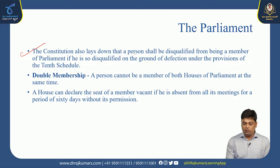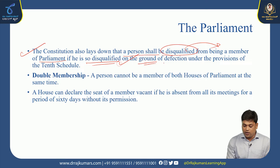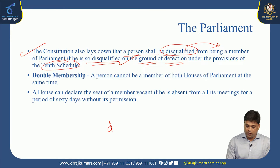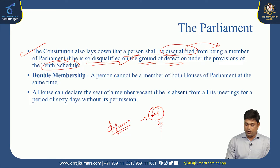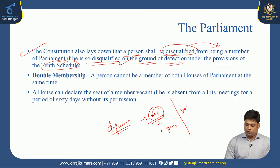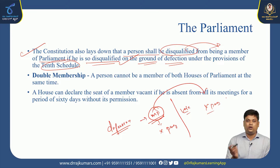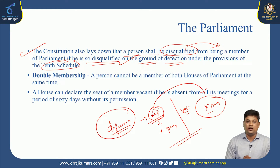The Constitution also lays down that a person shall be disqualified from being a member of Parliament if disqualified on the ground of defection under the 10th Schedule of the Constitution. Defection means contesting an election from Party X, winning a seat, and then voting in support of Party Y. This shift of loyalty is called defection and is a ground for disqualification of MPs.